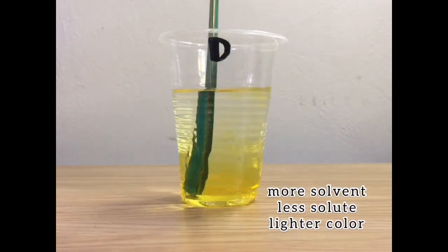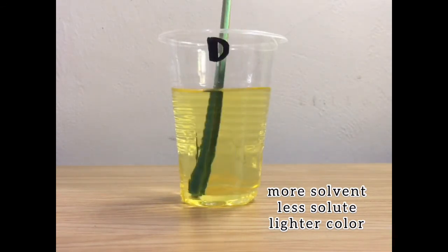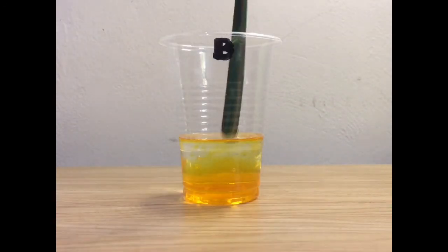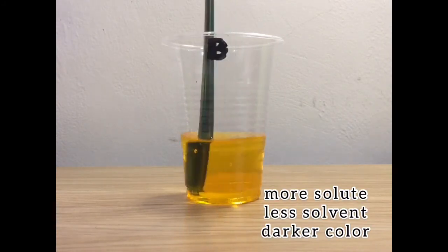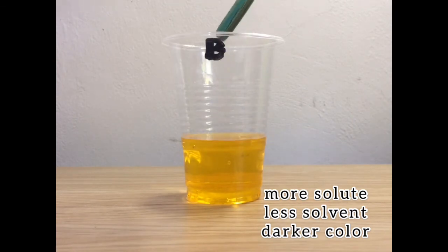A dilute solution has more solvent and less solute, and usually it has a lighter color, just like in solution D. While a concentrated solution has more solute and less solvent, usually it has a dark color, just like in solution B.